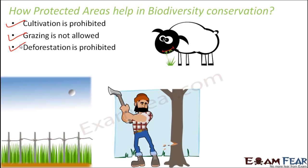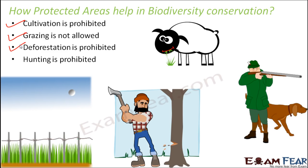Hunting is strictly prohibited as well. Deforestation, hunting, overgrazing, and cultivation all give threat to the habitat and to endangered species. Just to protect these species, all of these activities are not allowed in protected areas. This automatically keeps the plant and animal species protected.